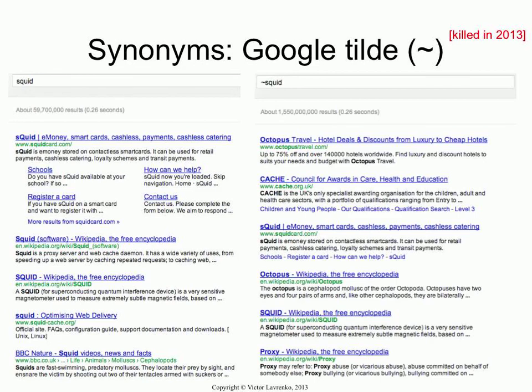It's actually quite similar in a way, but different in very interesting ways. First of all, there are a lot more matches — we have 60 million matches without tilde, and now we have 1.5 billion matches. So it is an expansion of some kind; it matches a lot more documents on the web.